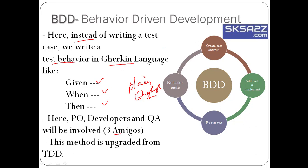For example, checking Gmail login: you launch the Gmail login page, enter the user ID and password, and click on the login button — then you should be able to log in and see the Gmail inbox. This is a plain English test case, understandable by everyone. In BDD, the behavior is tested, not the test case. In TDD, the test case itself is tested; in BDD, the behavior is tested.